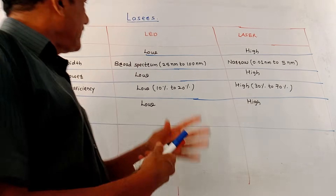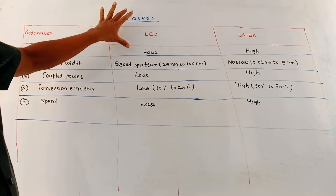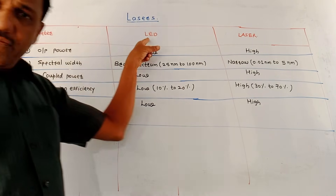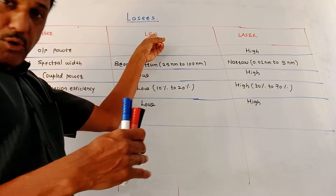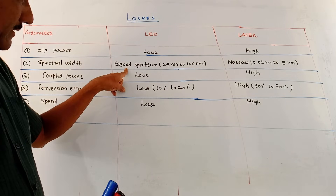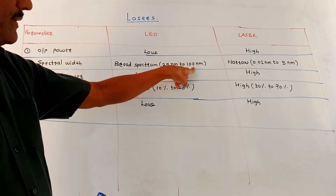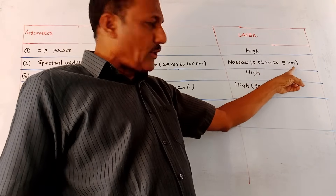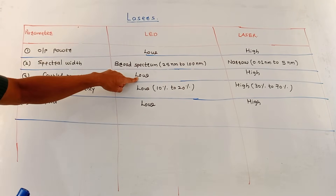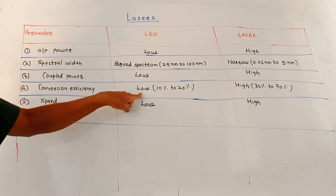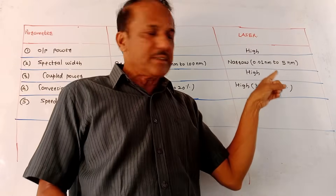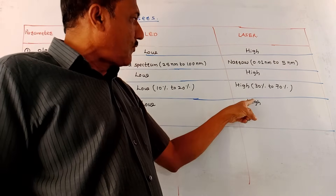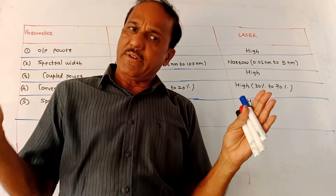Next important part is comparison between LED and laser diode. Output power in case of LED is low; for laser it is high. Spectral width of LED is broad — around 25 to 100 nanometers — because the light is spreading. In case of laser, spectral width is narrow — 0.01 to 5 nanometers. Coupled power for LED is low; for laser it is high. Conversion efficiency for LED is 10 to 20 percent (low); for laser it is 30 to 70 percent (high). Speed of operation is low for LED due to spreading of light rays, while for laser the speed of operation is high.